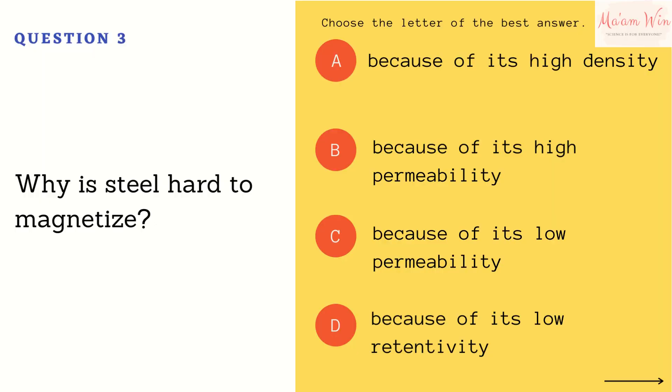Question number three: why is steel hard to magnetize? Letter A, because of its high density. Letter B, because of its high permeability. Letter C, because of its low permeability. Letter D, because of its low retentivity.